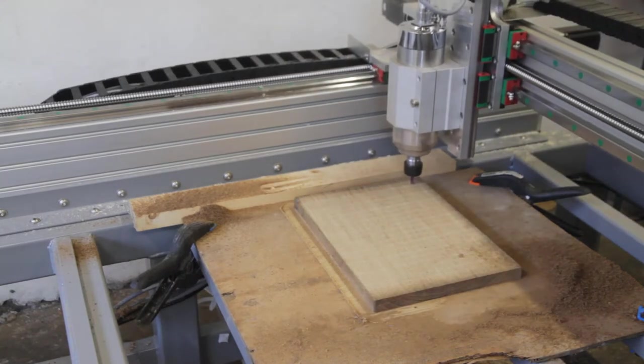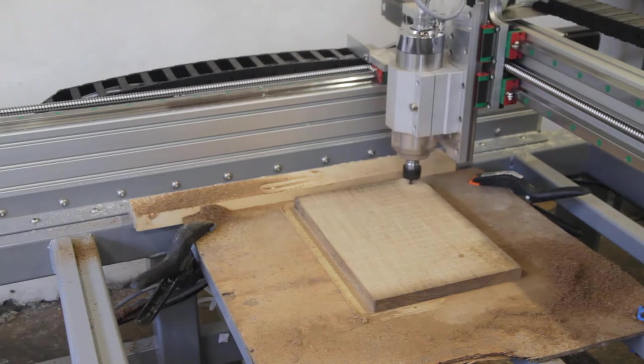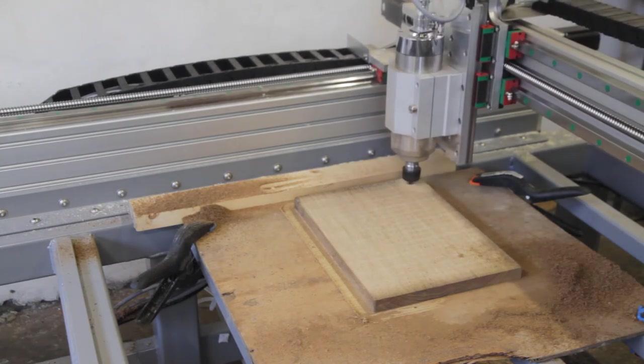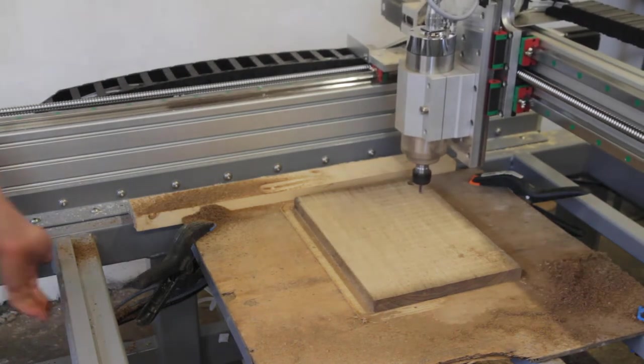Then it's moving on to making the holes. Here the feeds and speeds are also really slow. I would really recommend higher feeds and speeds. The bit here used is a five millimeter four flute end mill. It's actually better suited for harder materials but it worked fine here as well.